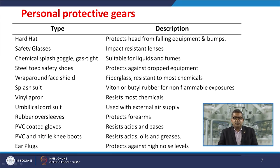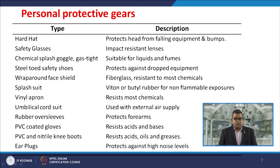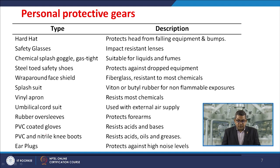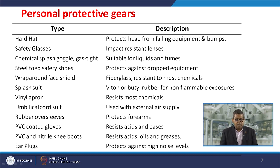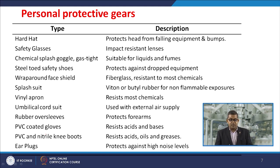Based on the gravity of the toxic substance, various protective gears are available: hard hats protect the head from falling equipment and bumps; safety glasses with impact-resistant lenses; chemical splash goggles and gas-tight goggles suitable for liquids and fumes; steel-toed safety shoes protect against dropped equipment; wrap-around face shields made of fiberglass, resistant to most chemicals; splash suits of neoprene or butyl rubber for non-flammable exposures; vinyl aprons resistant to most chemicals; umbilical cord suits with external air supply; rubber oversleeves protecting forearms; PVC-coated gloves resisting acid and bases; PVC and nitrile knee boots resisting acid, oil, and greases; and ear plugs protecting against high noise levels. These are essentially barriers between the toxic substance and yourself.